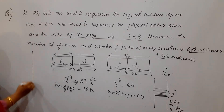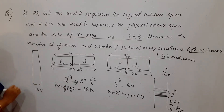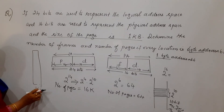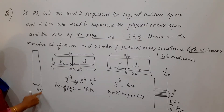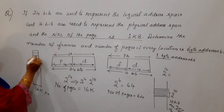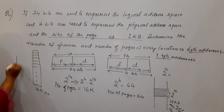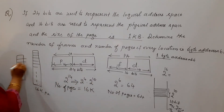If this is your logical memory, it has 16 K pages — one page, two page, three page, and so on up to 16 K. And our physical memory has 64 frames.